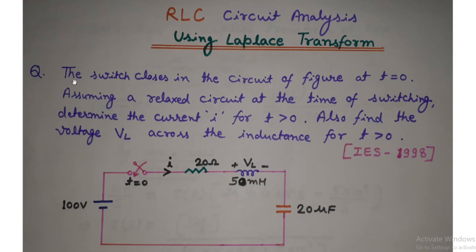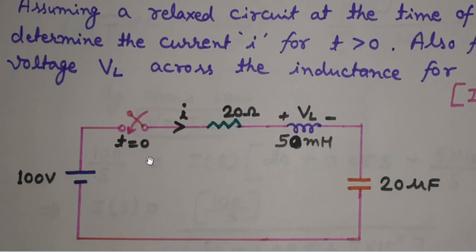Let's see the question. The question is: the switch closes in the circuit of figure at t equal to 0. Assuming a relaxed circuit at the time of switching, determine the current I for t greater than 0. Also, find the voltage VL across the inductance for t greater than 0. So we want to find the current I flowing in the circuit and the voltage across this inductor for t greater than 0. This question was asked in IES.